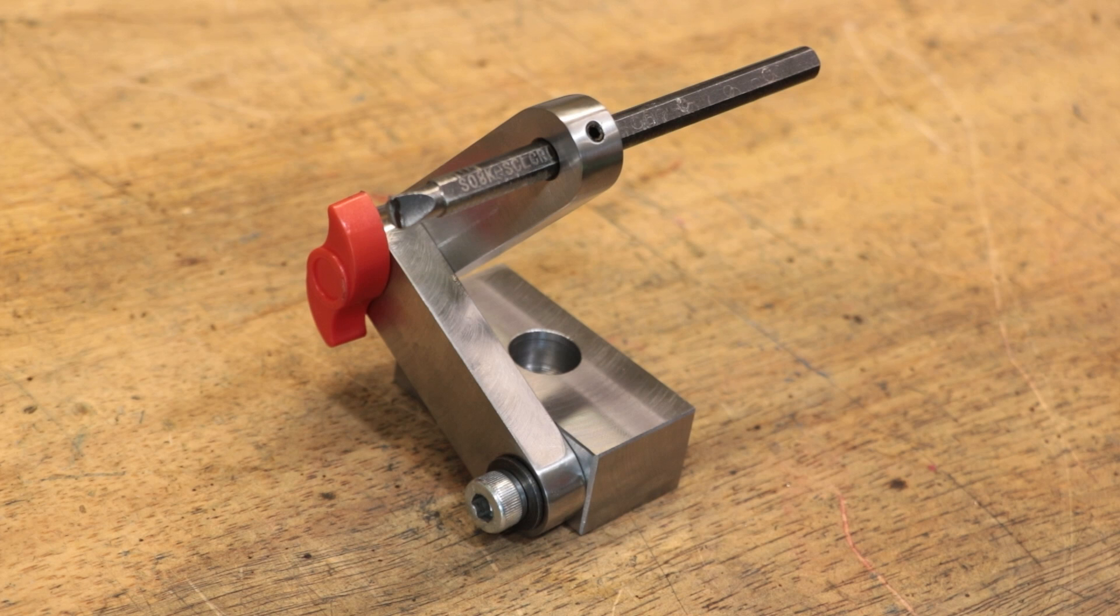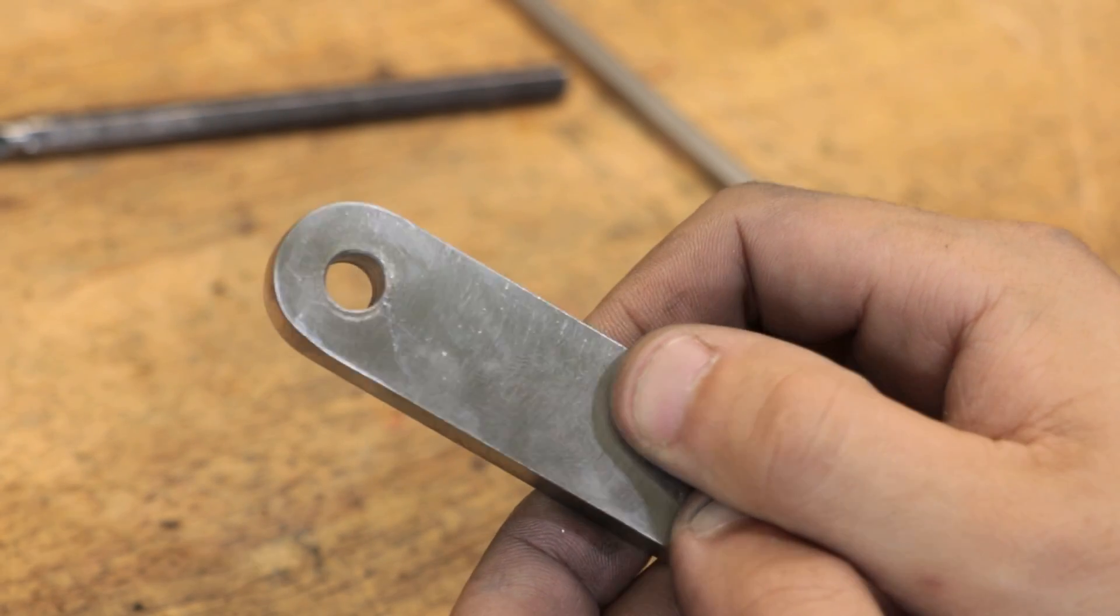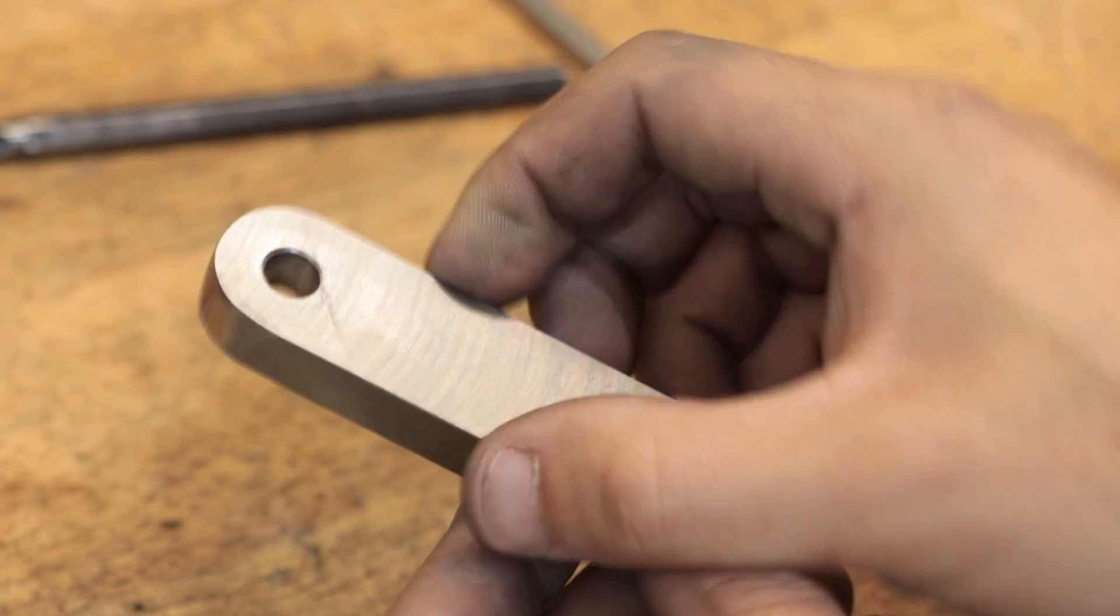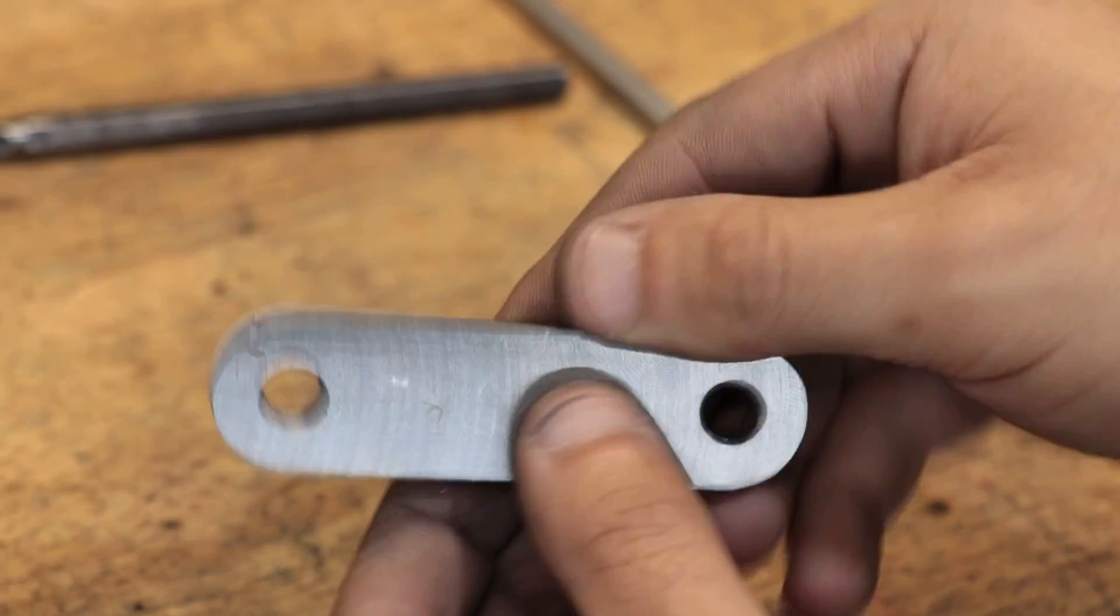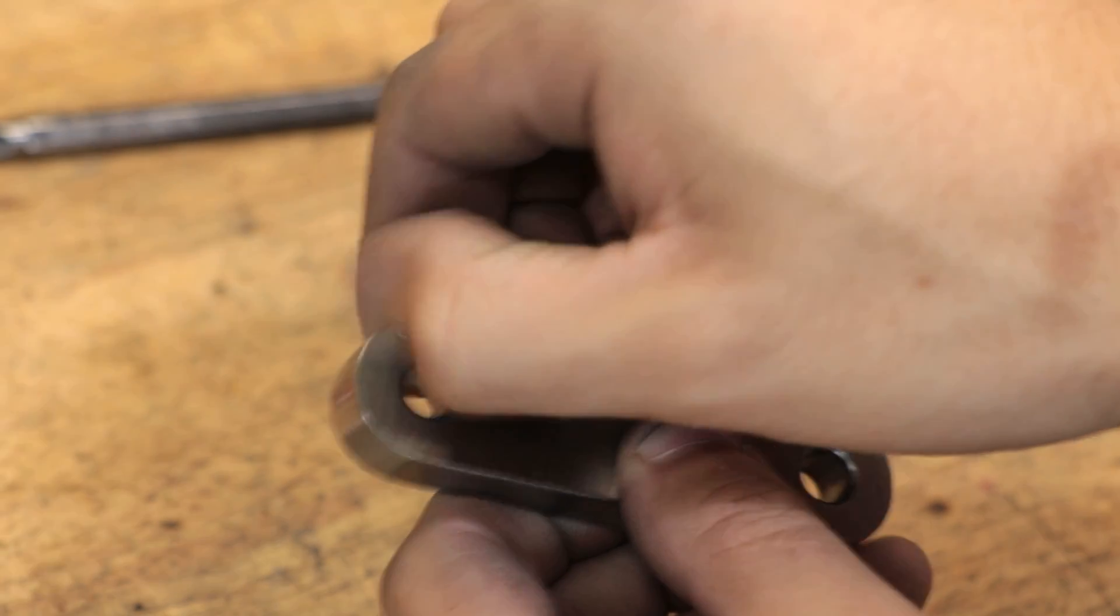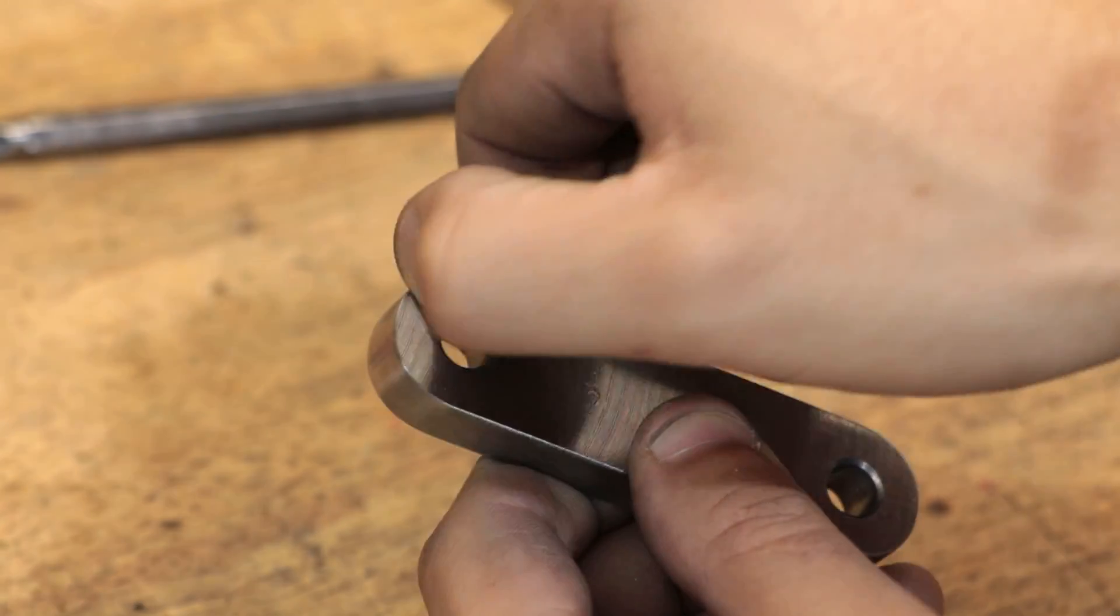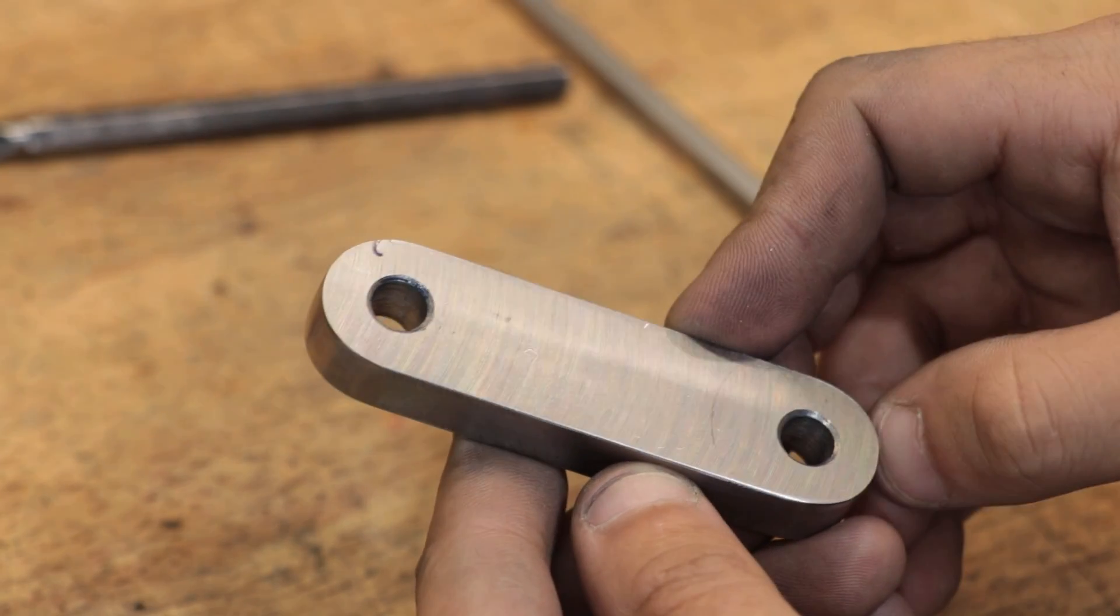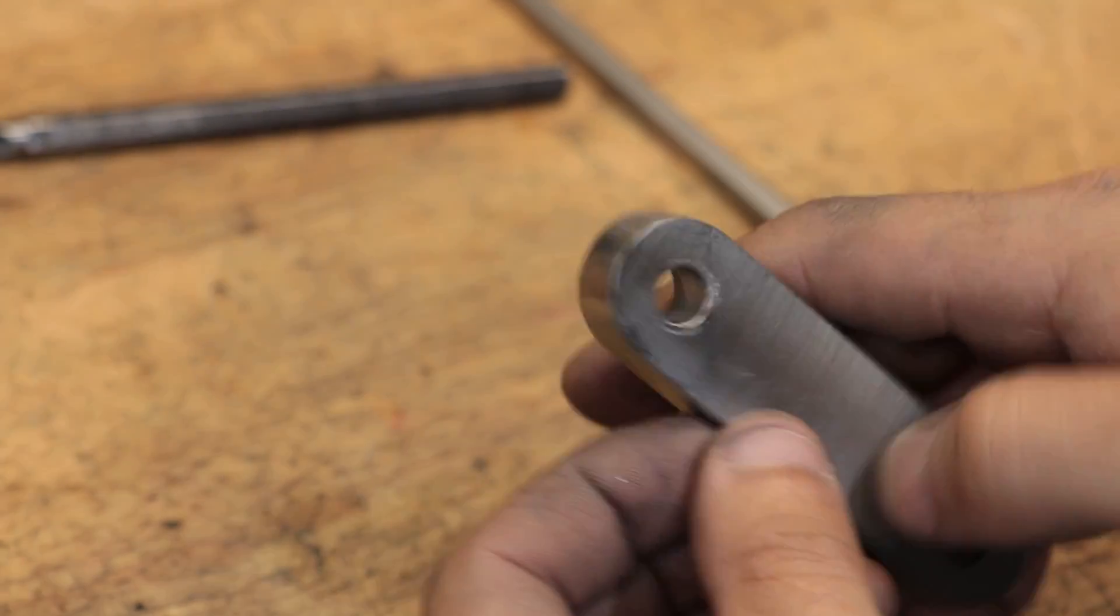But one thing I would like to do first is harden it. Because I made the part from mild steel, it is quite soft, and in the short time it's taken to make the part, it has picked up quite a few scratches and dings. I am planning on using this for many years to come, so what I'd like to do is harden it and that should hopefully make it a little bit more durable.